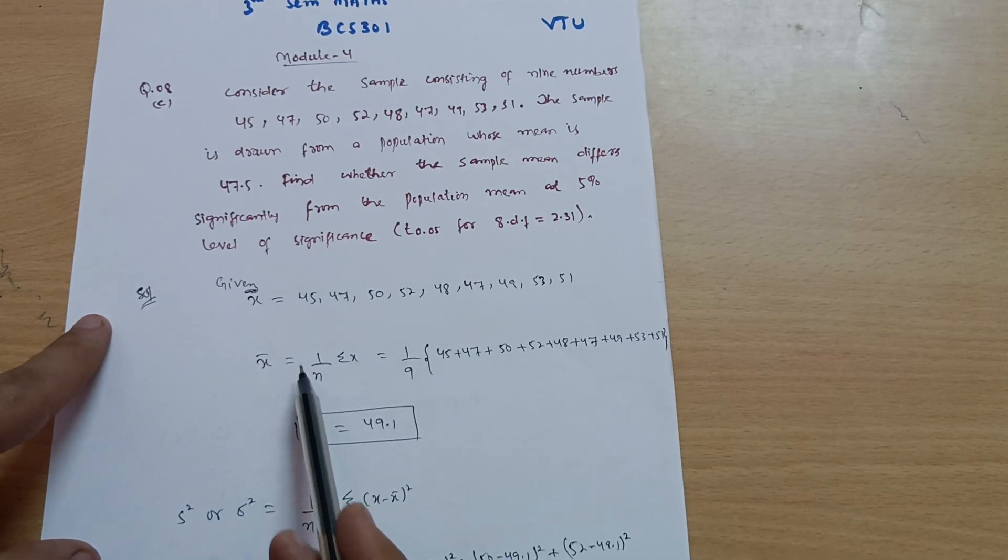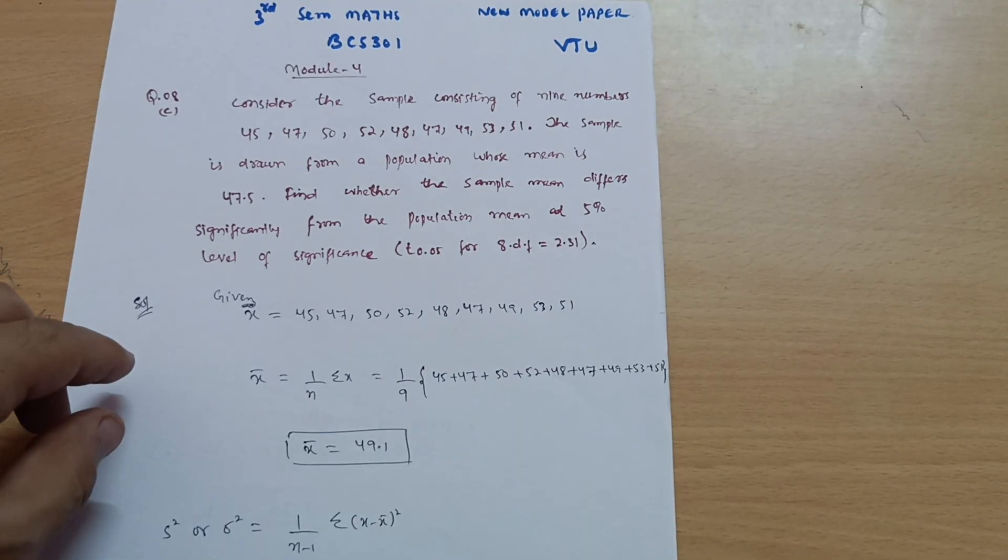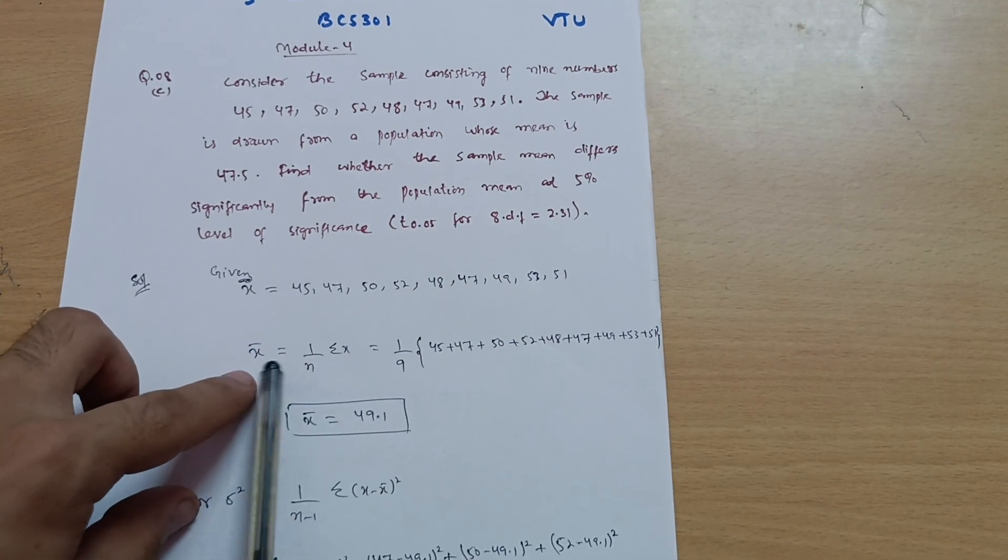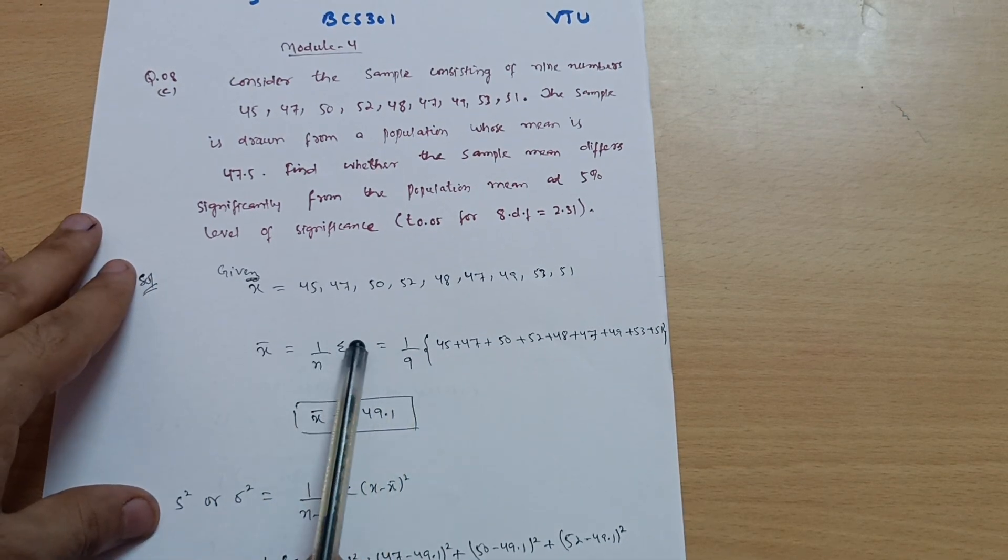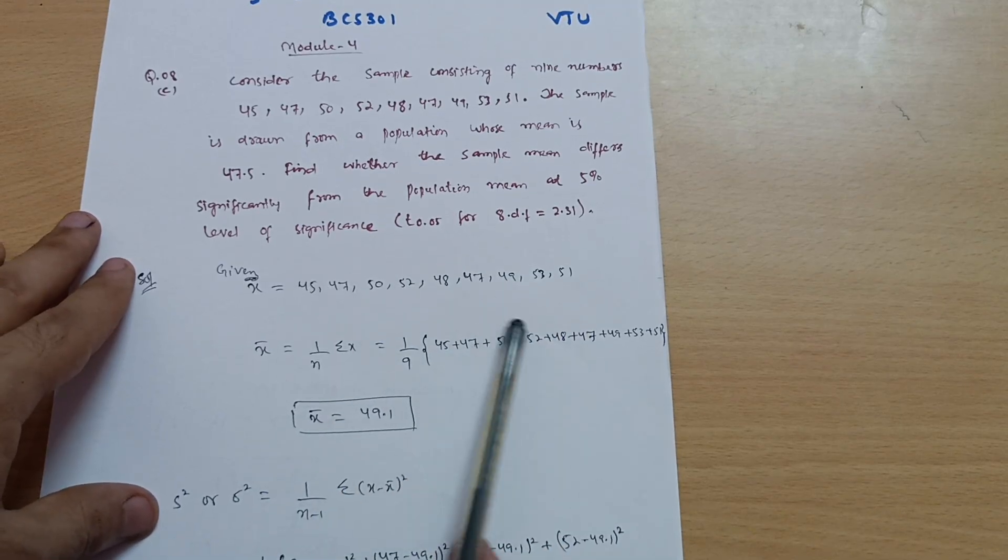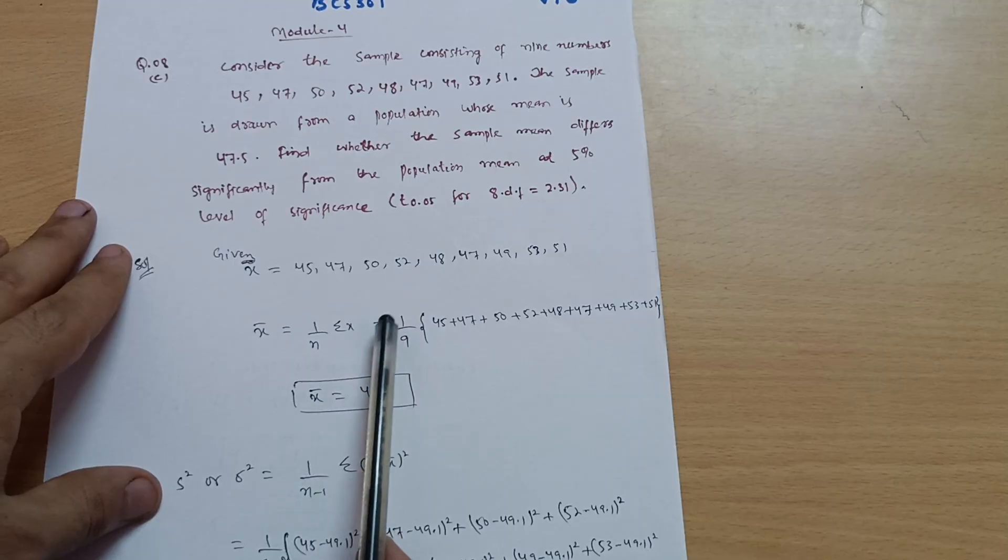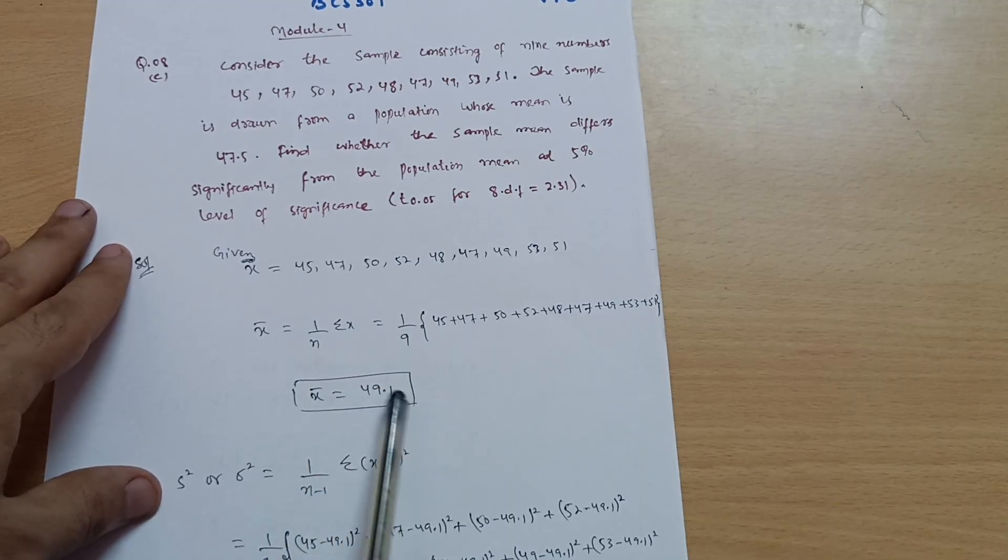So I can calculate the mean from this particular observation. So X bar is equal to 1 divided by N summation of X. So this is the formula which we have while solving the T distribution problems. 1 divided by 9 and summation of X means you have to sum up these terms, 45 plus 47 like that. You will get the summation as X bar is equal to 49.1. This is the mean.